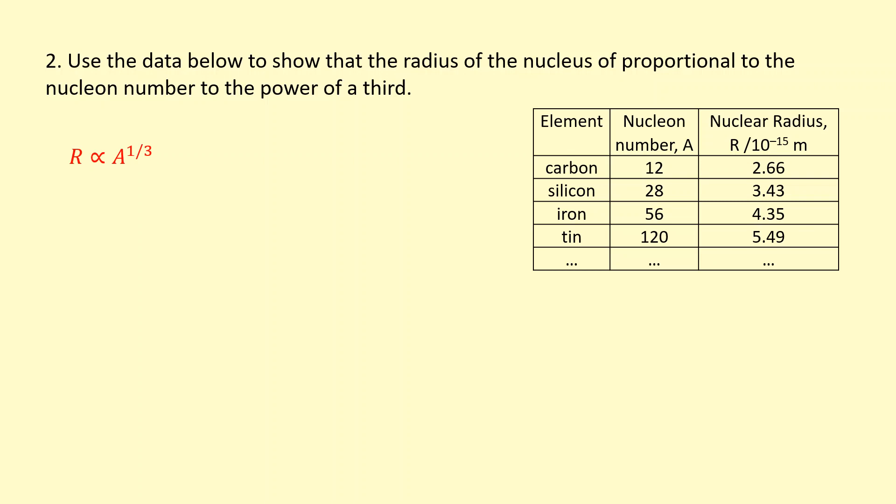This means, written as an equation, we have some constant K. Now we already know that K is R₀, which is approximately 1 or 1.2 femtometers. But we're going to have to prove that it's a constant.